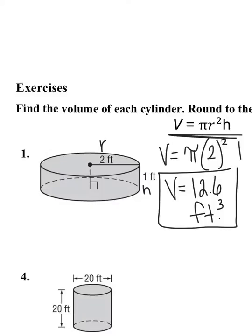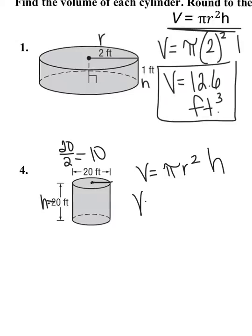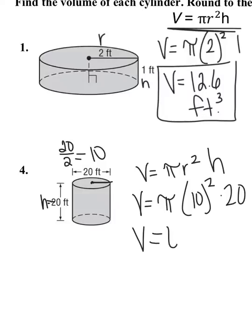For the next cylinder problem, all I need is the radius and height. I see that across the whole circle is 20, so the diameter is 20. The radius is 20 divided by 2, which is 10, and the height is 20. Volume equals pi times 10 squared times 20. The volume of this cylinder equals approximately 6,283.2 feet cubed.